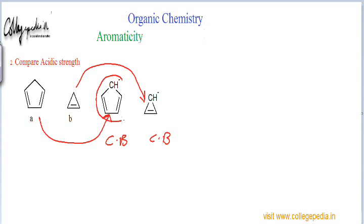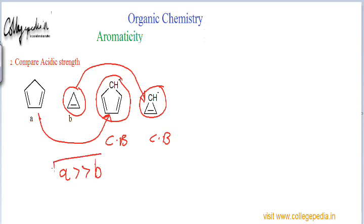One conjugate base is aromatic and the other is anti-aromatic. Because the anti-aromatic intermediate is highly unstable, it will not form — meaning that molecule will not release H+ since doing so would produce an anti-aromatic compound. So it is not a good acid at all. On the contrary, cyclopentadiene has a high tendency to give off its H+ because it forms a stable aromatic conjugate base. Therefore cyclopentadiene — molecule A — is much more acidic than cyclopropene — molecule B.